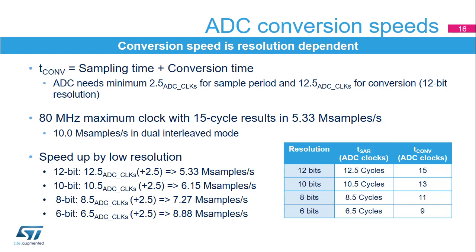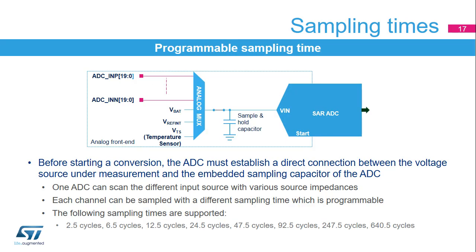When associating a master and a slave ADC, the interleaved mode maximum performance is one sample every 8 clocks, so 10 megasamples per second at 80 MHz clock. The first step of a conversion consists in loading the sample and hold capacitor with the voltage to be measured. Longer sample times ensure that signals having a higher impedance are correctly converted. The sampling times listed in this slide in ADC clock cycles are available. The sampling time can be programmed individually for each input channel of the analog-to-digital converters.